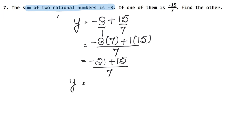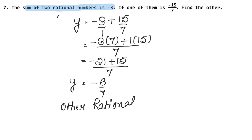So our y value: there is a minus value and a plus value, so we subtract. The sign follows the greater value, giving us minus 6 upon 7. So the other rational number is minus 6 upon 7.